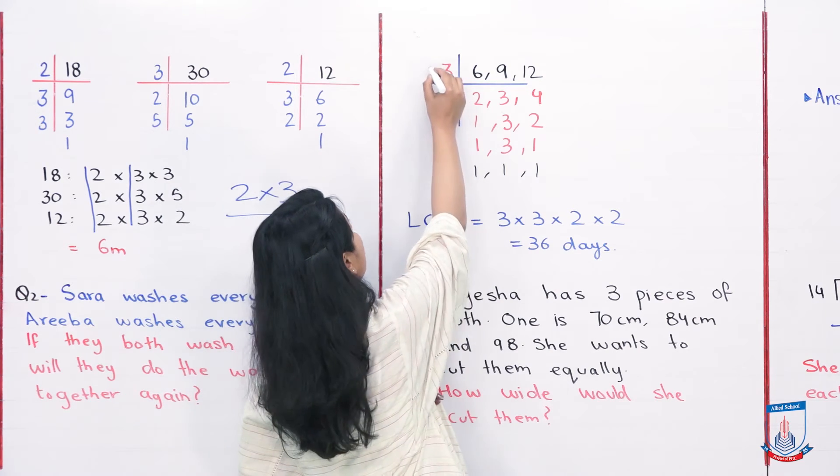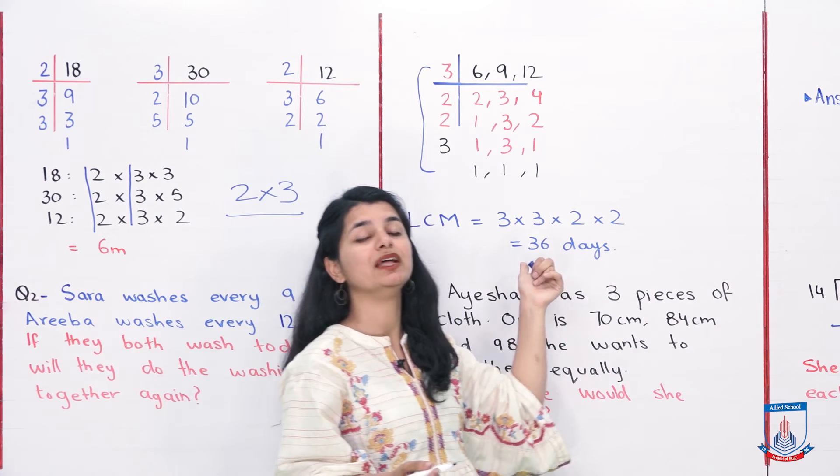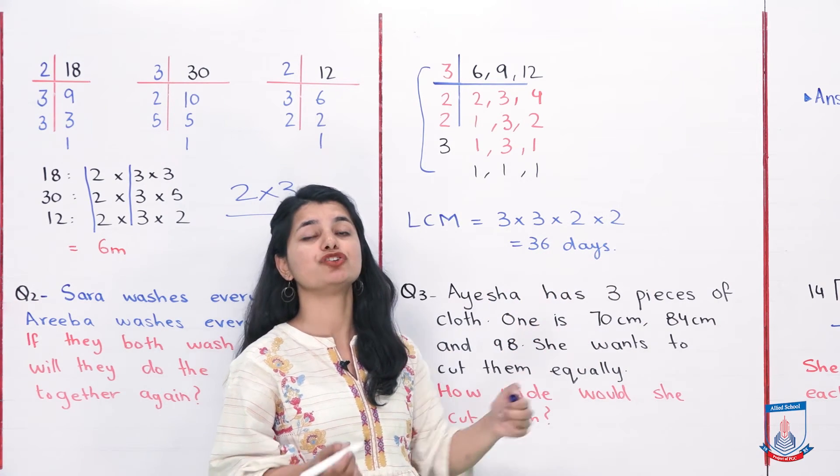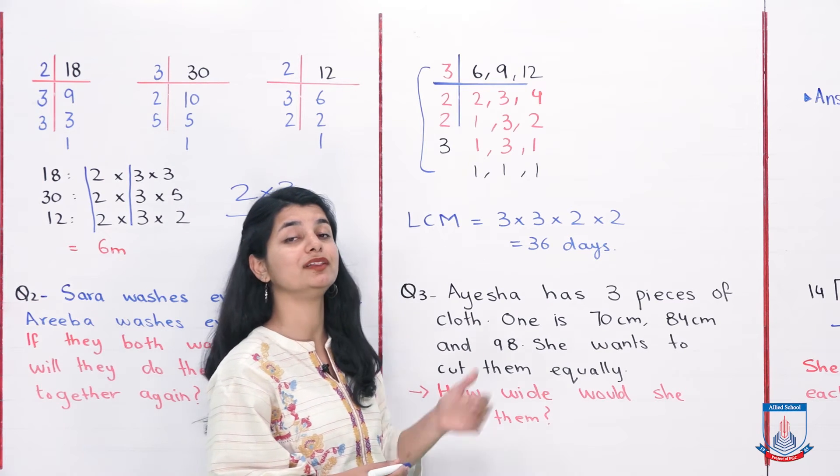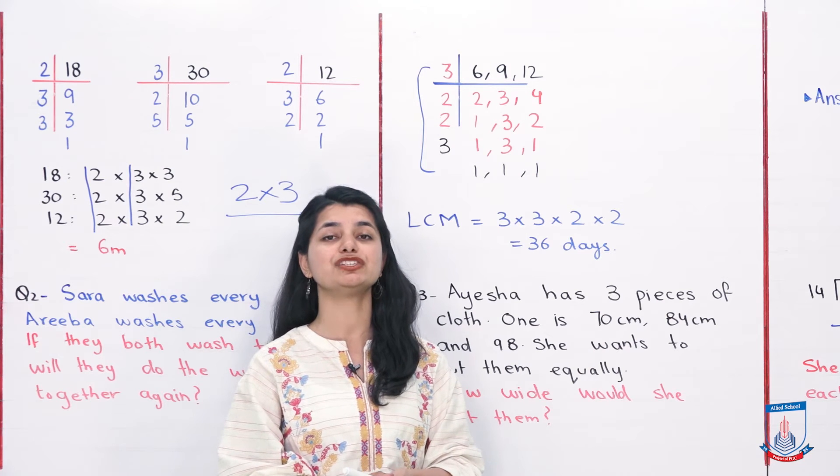So I have to multiply them: 3 × 3 × 2 × 2, which is 36 days. They will do washing together after 36 days. That is my answer. Simply, we have calculated LCM by the method of factorization.